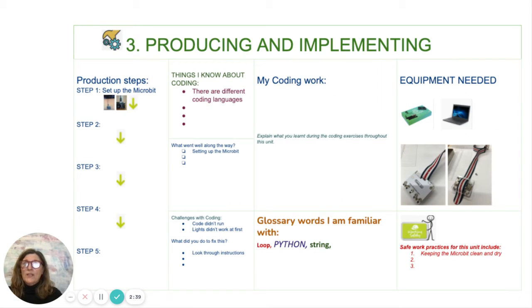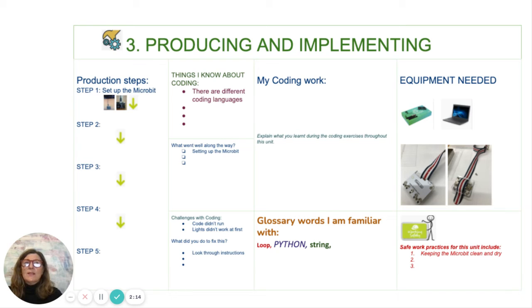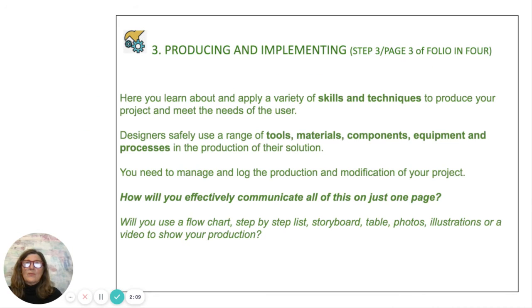Step three, or page three, of the Folio in Four is producing and implementing. This is where you show your production steps — step one, step two, right through to when you have a completed project. You can also include things you've learnt about coding and some screenshots of the work you've been doing in planning the coding. Even if mistakes were made, it's still a good idea to include them on this page. Again, there's a list of guidelines as to what sorts of things can appear on this page.